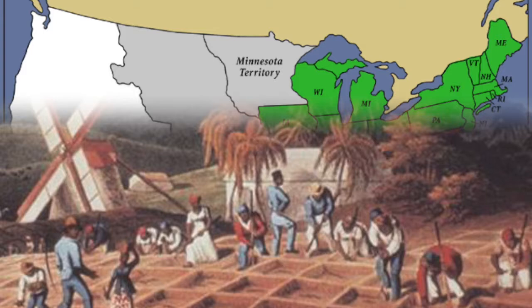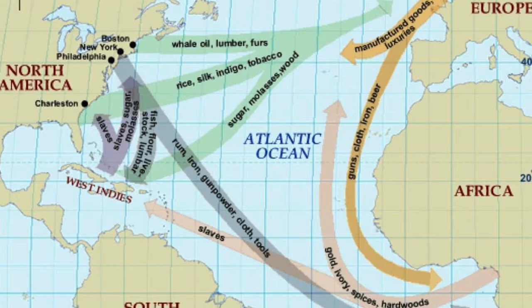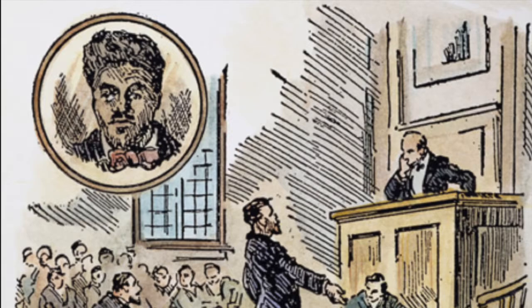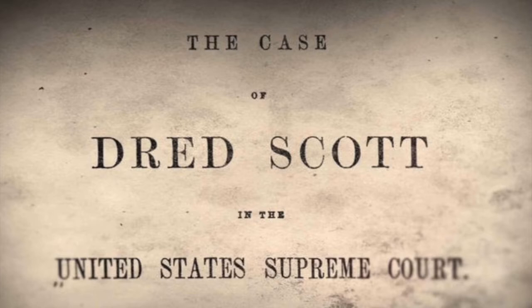The impact of the Dred Scott v. Sanford case was that the Supreme Court ruled that Congress cannot limit slaves, and the Missouri Compromise was unconstitutional. Dred Scott was taken by his owner to the North and then back to the South. Scott then sued for his freedom and argued that he could not be taken back into slavery after he had been on free soil.